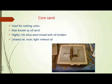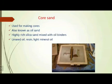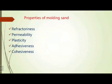Core sand is used for making cores — it is also known as oil sand. It is highly rich silica sand mixed with oil binders such as linseed oil, resin, and light mineral oil. We have already discussed the properties of molding sand in our earlier sessions.